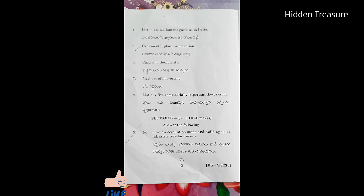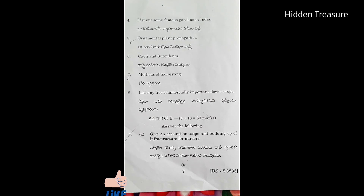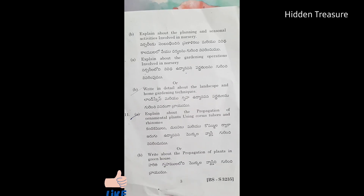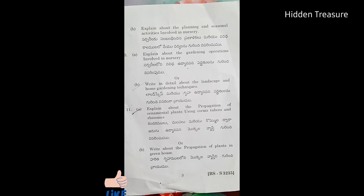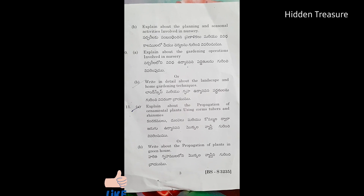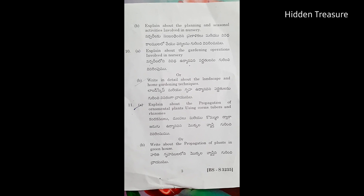Section B has five questions with internal options; choose one option from each and answer. Ninth question option: give an account on scope and building up of infrastructure for nursery. Or, explain about planning and seasonal activities involved in nursery.